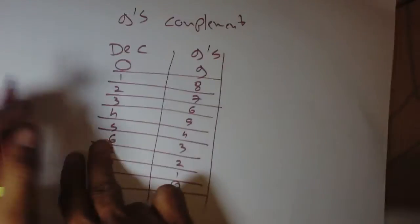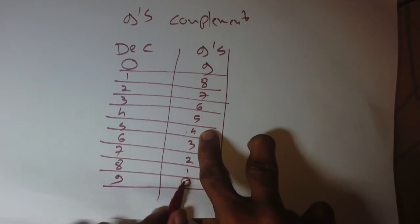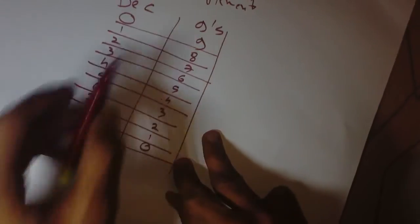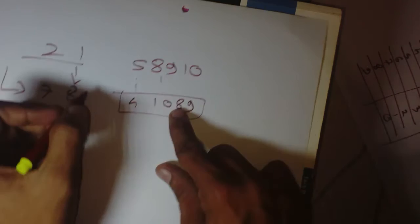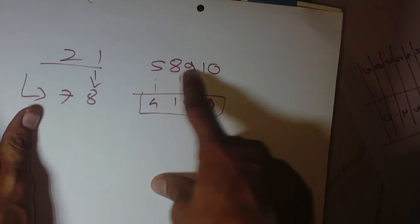410895. This is nine's complement of this decimal number.